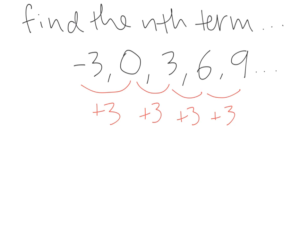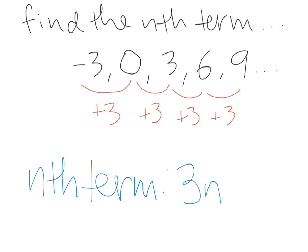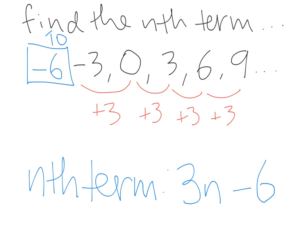We start our nth term with the common difference, which is 3, and stick on an n — giving us 3n. Now we find the zero term. Since -3 is the first term and we're going up by 3, we go back by 3: -3 minus 3 is -6. So term zero is -6, and we stick on -6, giving the nth term: 3n - 6.